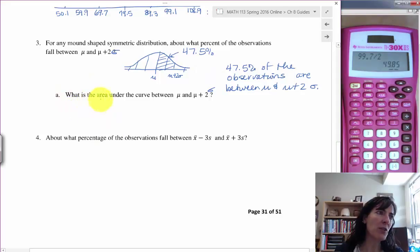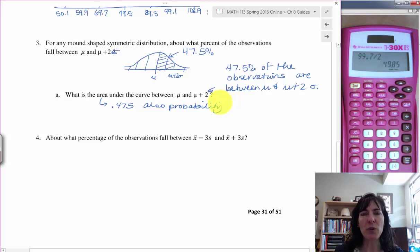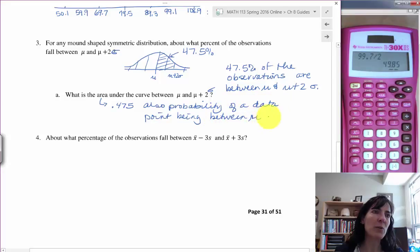And if we want the area under the curve, then we're talking about 0.475 is the area under the curve. It is also the probability that some randomly chosen data point falls into that area between mu and mu plus 2 sigma. Also probability of a data point being between mu and mu plus 2 sigma. So that is the area under the curve. That's how it looks, just like a probability.